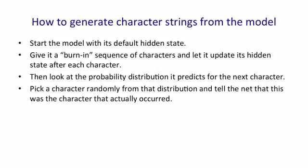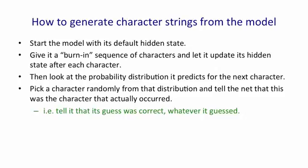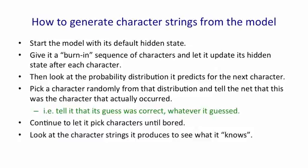We then tell the net that whatever character we picked was the character that actually occurred and ask it to predict the next character. In other words, we're telling it that whatever it guesses is correct. We let it continue to pick characters until we've got as many as we want, and then we look at the strings it produces to see what it knows.